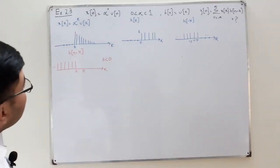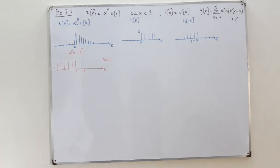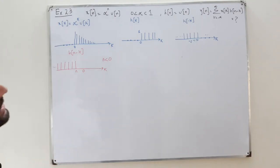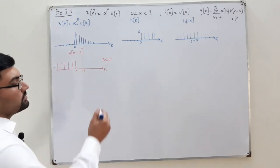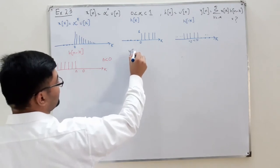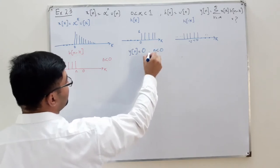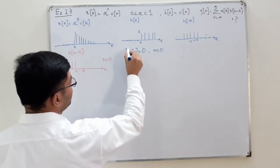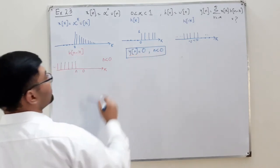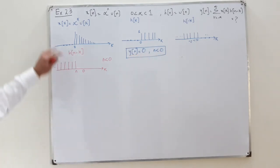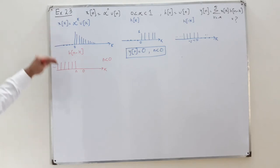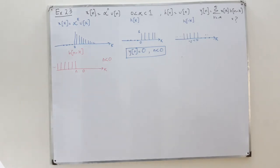Now we find the product. For n less than 0, the product would be 0. So y(n) equals 0 for n less than 0, because in that case x(k) is 0 — there is no overlap between the two signals.